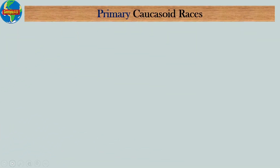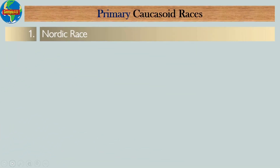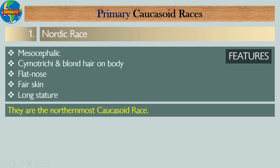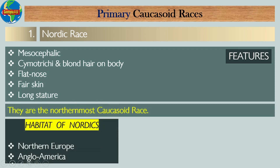Primary Caucasoid races — Number one: Nordic race. The features of the Nordic race are: they are mesocephalic; they have blonde hair on the body; they have a flat nose; they have fair skin; and they are of long stature. They are the northernmost Caucasoid race. The habitat of the Nordics includes Northern Europe and Anglo-America.